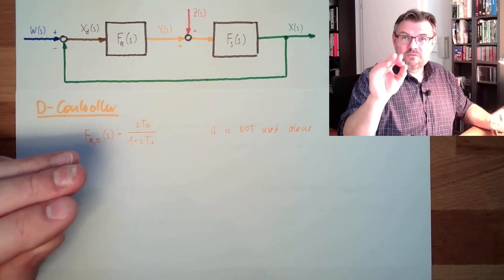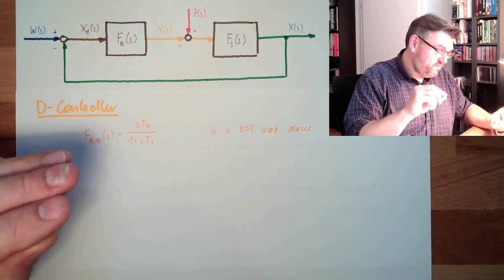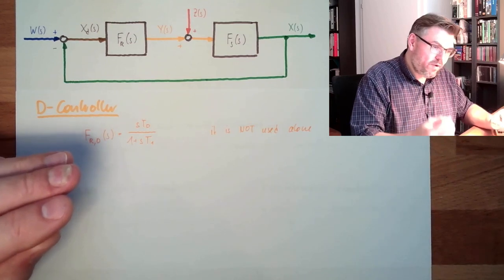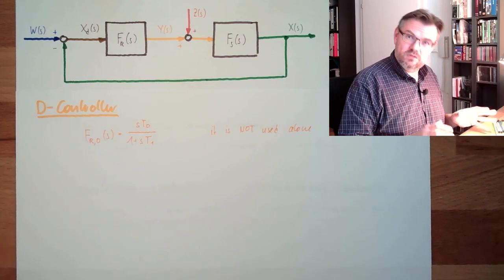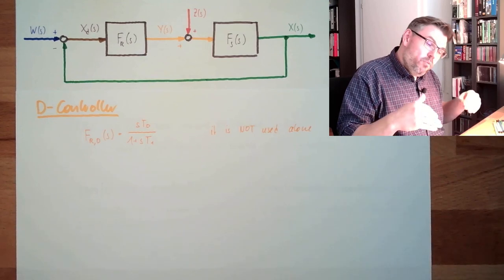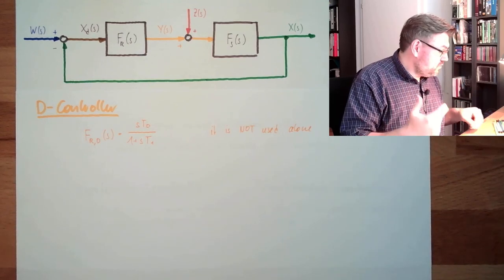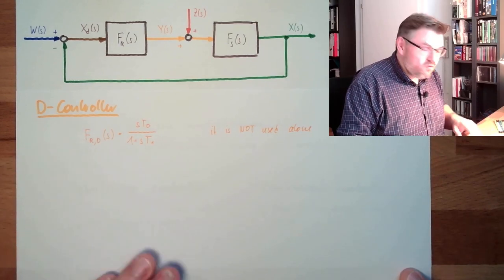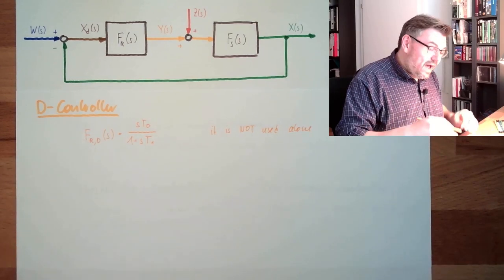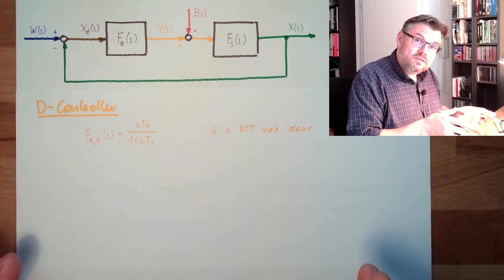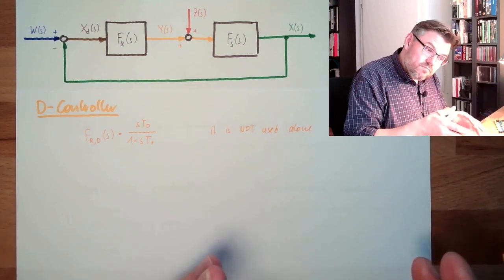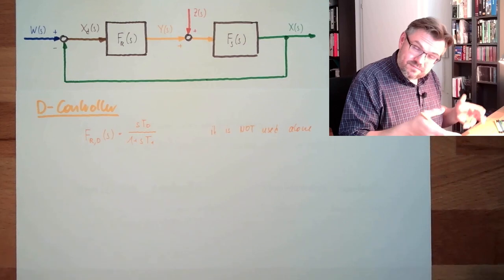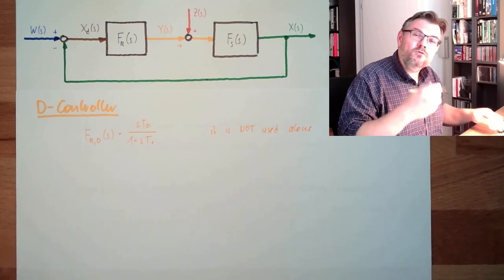We will see later, phase values do have influence on how stable a system is. Positive phase values help to stabilize a system. So we are often using D-controllers inside other controllers to stabilize a system.